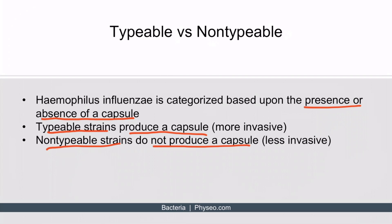It's important to know that typable strains are more invasive. This should make sense if you recall that a polysaccharide capsule helps the organism resist phagocytosis. So if the organism cannot be as easily destroyed by the immune system, it's more likely to infiltrate vital organs and cause more harm. On the other hand, non-typable strains do not produce a capsule, so they're less likely to evade the immune system and are therefore less invasive.